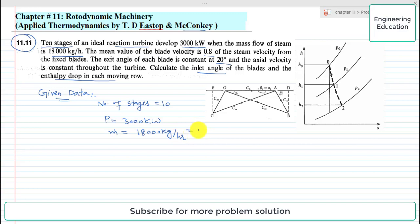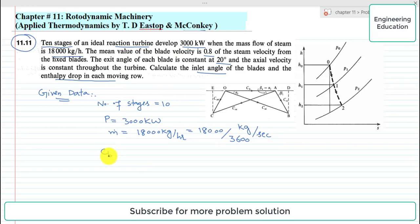We need to convert the mass flow rate into kilogram per second: 18,000 divided by 3600. Similarly, the mean blade velocity C_b equals 0.8 times the absolute velocity at inlet. Alpha_i is given as 20 degrees and it is fixed for each blade.